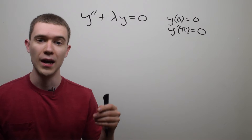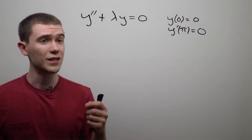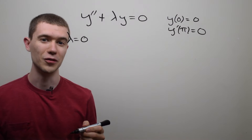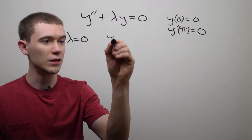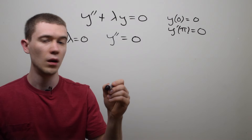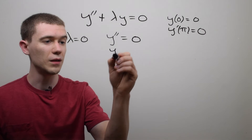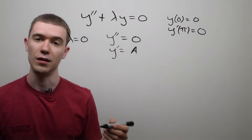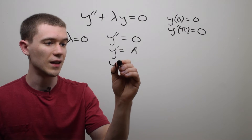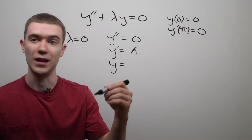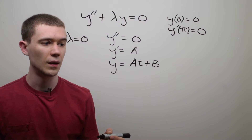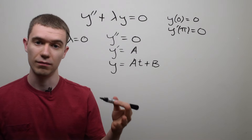λ being your eigenvalue, different things will happen to this function. For example, one thing that could happen is that λ = 0. This might be the most boring case, but if λ = 0 that means our differential equation reduces to y'' = 0. Well, if y'' = 0, that means y' would be some constant a. If I take the derivative of a constant I get zero, and if y' is a constant that means y would be something like at + b.